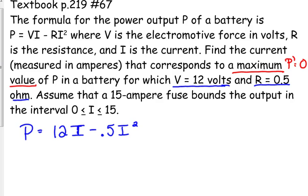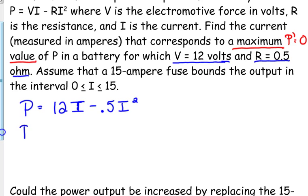So really, I squared is our only variable in this equation. So when we take the derivative, P prime is equal to the derivative of 12I is 12 minus 0.5 times 2I. So P prime equals 12 minus I.